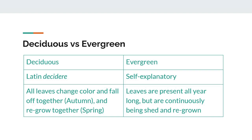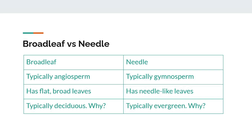Evergreen tree leaves have special adaptations such as a needle-like shape or thicker waxy coating, which allows them to remain on during the winter. The trees of the Science Olympiad forestry list can be divided into angiosperms and gymnosperms. The leaves of angiosperms are typically broad and flat, hence why they are sometimes called broadleafs. On the other hand, gymnosperm leaves are typically stiffer and needle-like. For now, the two main categories of leaves we will focus on are broadleafs and needles.